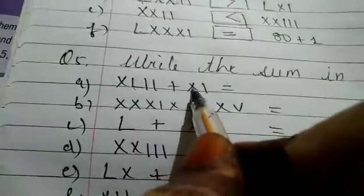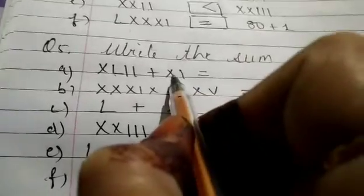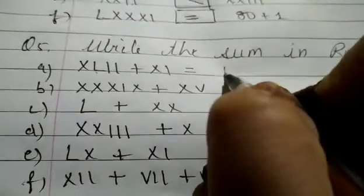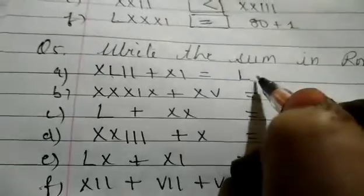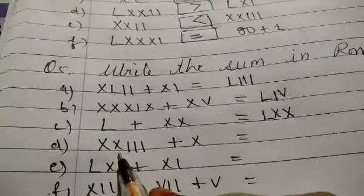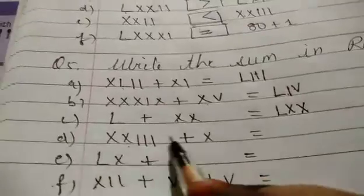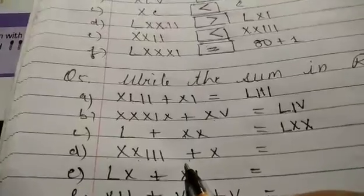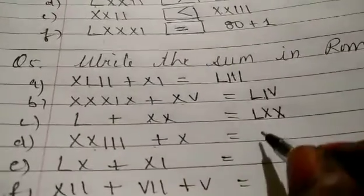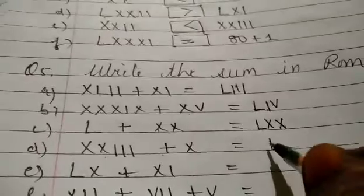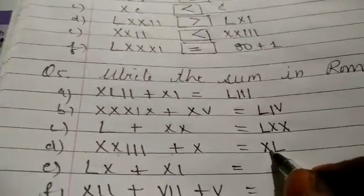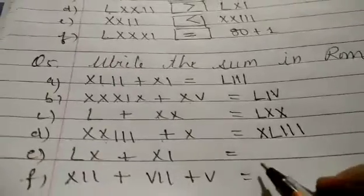50 minus 10 is 40 plus 2 is 42. And here 10 plus 1 is 11. So 42 plus 11 is 53. So we will write 50 plus 3 is 23 plus 10. So 23 plus 10 is 43. So how we will write 43? We will write 50 and minus 10. So 40, 1, 2 and 3. So 43.